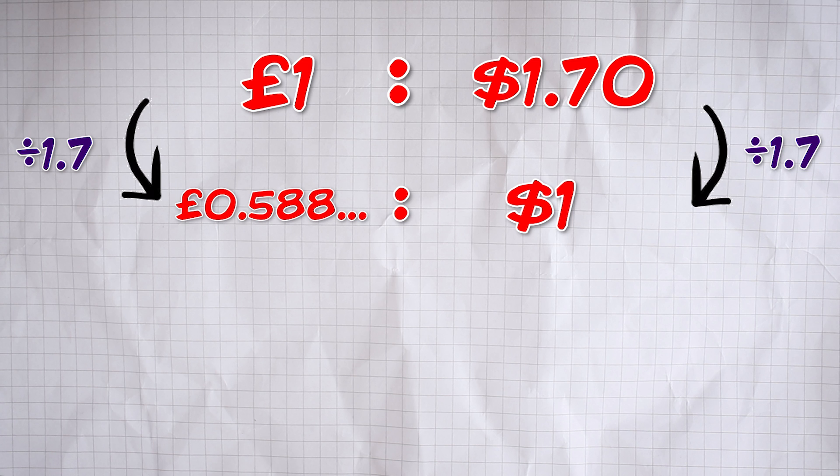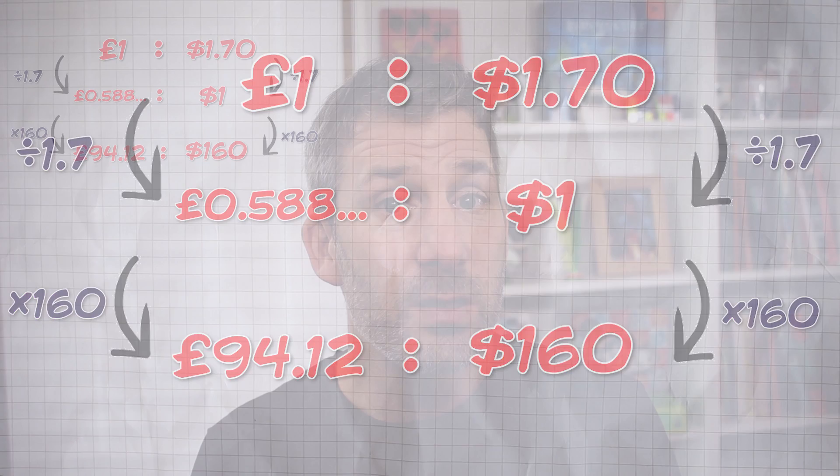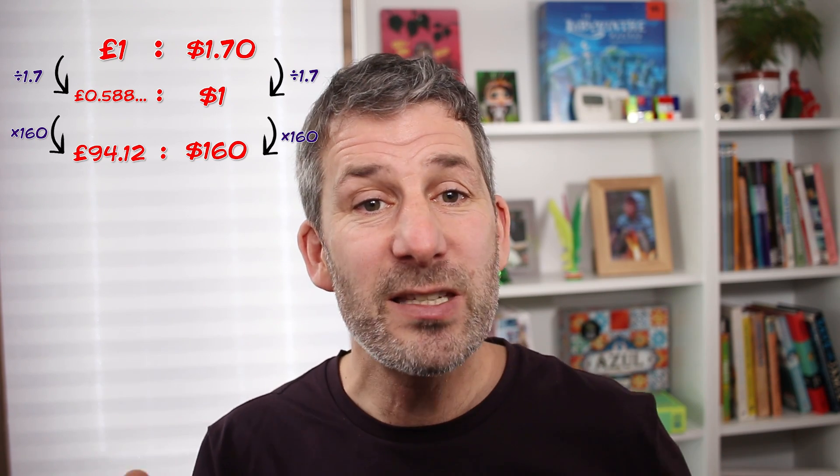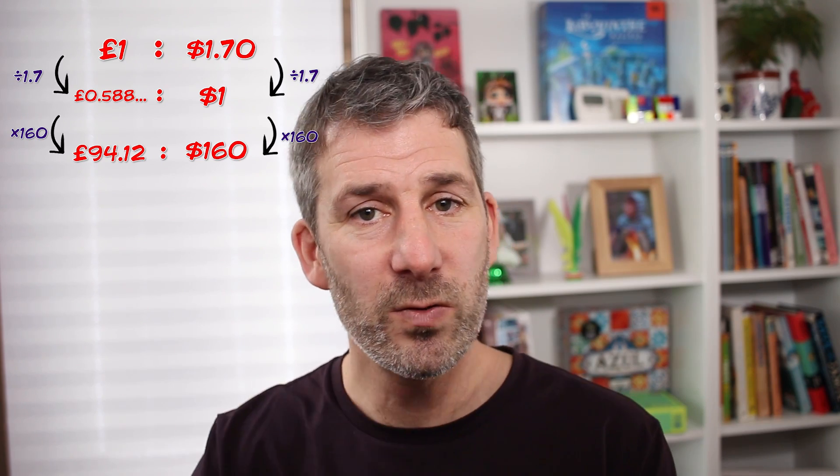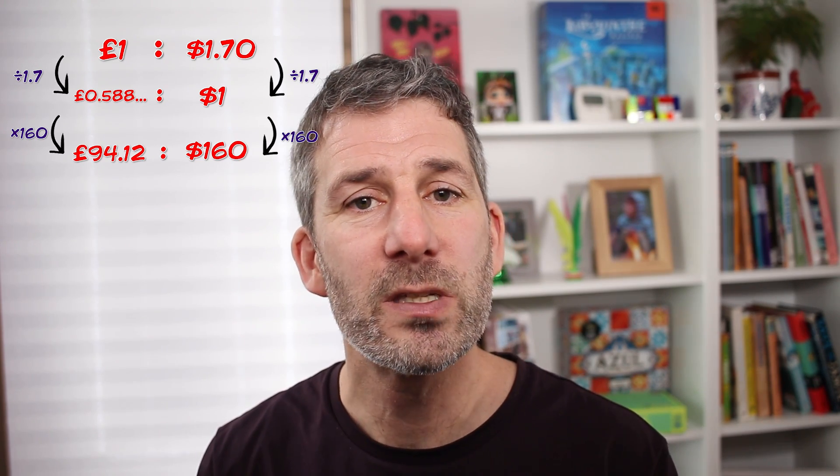Now, we have a ratio that shows us that $1 is equal to just under 59 pence. Then it's really straightforward from here. We just need to multiply by 160 to get those dollars up to $160. We're talking about money so it makes sense to round off our answer and you can see that $160 is equal to £94.12.